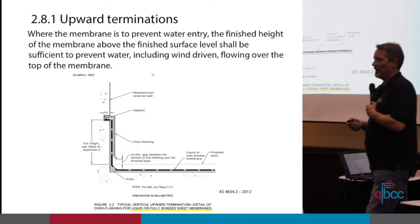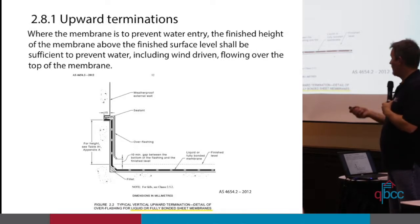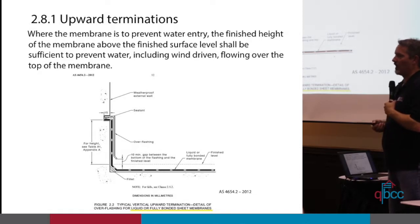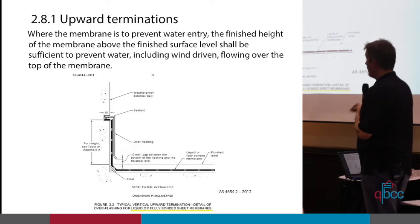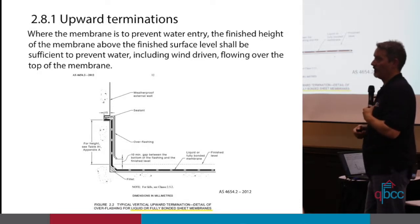The standard only gives you one detail for terminating a membrane on a wall: cut a reglet, turn the membrane in, and put an overflashing over it. That applies to liquid or fully bonded sheet membranes, and it's okay for masonry construction. It's a little more difficult if you're doing frame construction with sheet cladding — you'd have to do it in two stages: cut the sheet to that height, waterproof it, put a zed flashing in, then put another sheet on top.